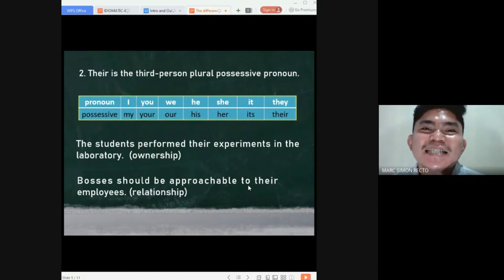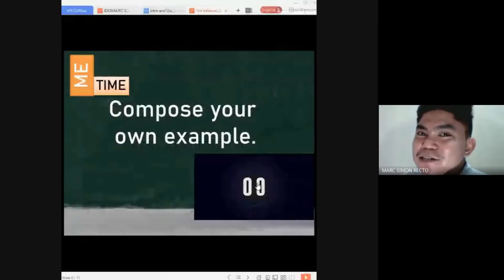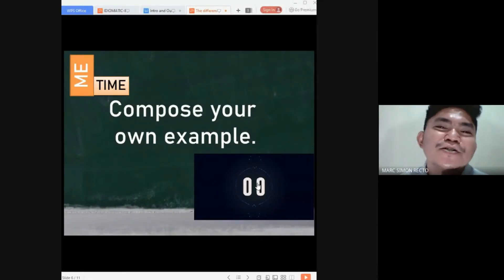That has been our second word there, spelled as T-H-E-I-R. We will be having another me time. Compose your own sentence. I will be giving you 10 seconds to do that. Your timer starts now. Time's up. Let me hear your sentence. Good. You keep creating your own sentence, composing your own sentence. That's a great one. And we'll be having the last word.